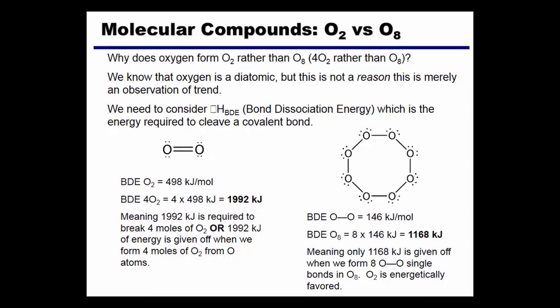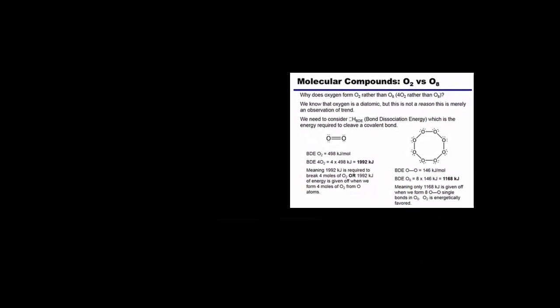We're going to have a look at the two structures here, O2 and O8. If I had four moles of O2, I would have the same number of oxygen atoms as O8. So I'm going to use bond enthalpies to show that O2 is more favorable.